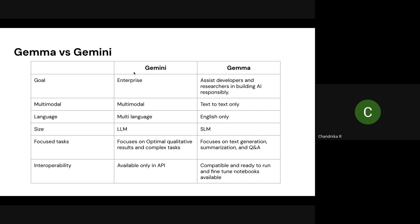In terms of multi-modality, Gemini handles text, images, and videos and can generate images. But Gemma is trained only for text-to-text conversion — it handles and generates only text. That is one major difference. In terms of multiple language support, Gemini supports multiple languages, but Gemma supports only English. It is trained on English and the output generation is also only English for now. Comparing size, Gemini is a large language model, while Gemma falls under the smaller language model category — especially with the 2B variant.